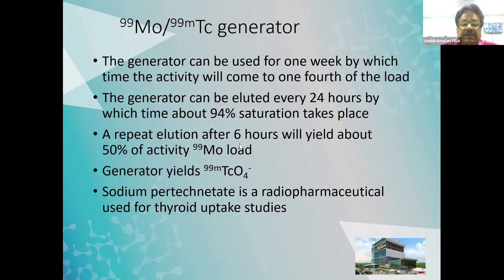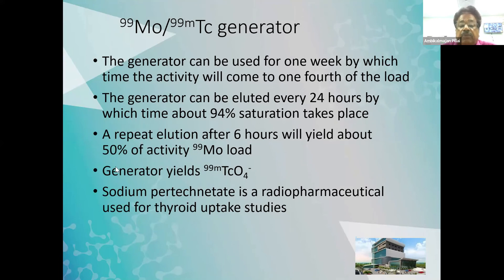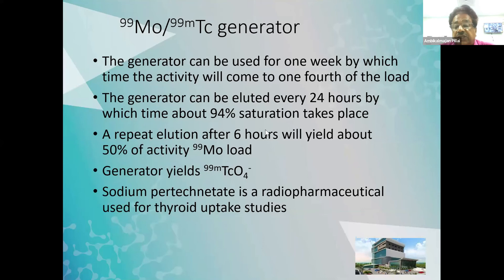The pertechnetate is a radiopharmaceutical. The generator can be used for one week, by which time the activity comes to one-fourth of the load. It can be eluted every 24 hours, by which time about 94% saturation takes place. If you want a repeat elution — say you got 500 millicuries in the morning and need more activity in the evening — after six hours of growth you will get about 50% of the molybdenum load, for example around 250 millicuries, allowing you to schedule a few more studies.